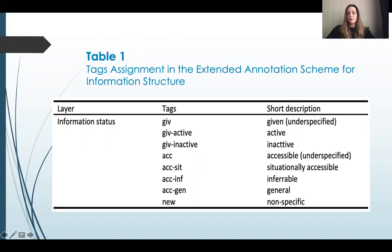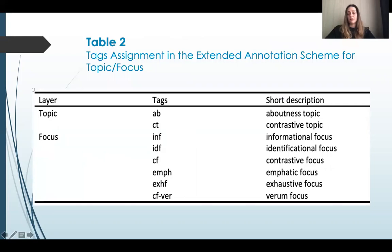The information status of various linguistic expressions can also be identified in the context of topicality and focality. In the current study, a topic is defined in pragmatic terms. Focus presents the salient information in the sentence, and in this study we single out informational, identificational, empathic, exhaustive, contrastive, and verum focus types. Table 2 summarizes the tags applied to the analysis of the second type of dichotomy, that is, topic versus focus.